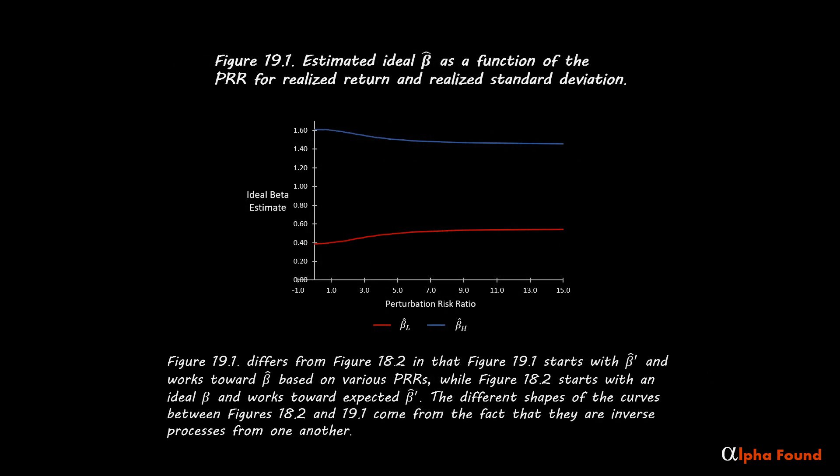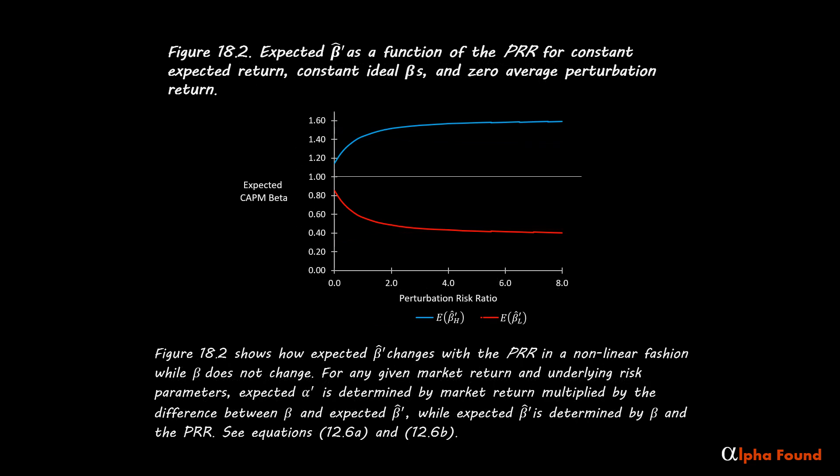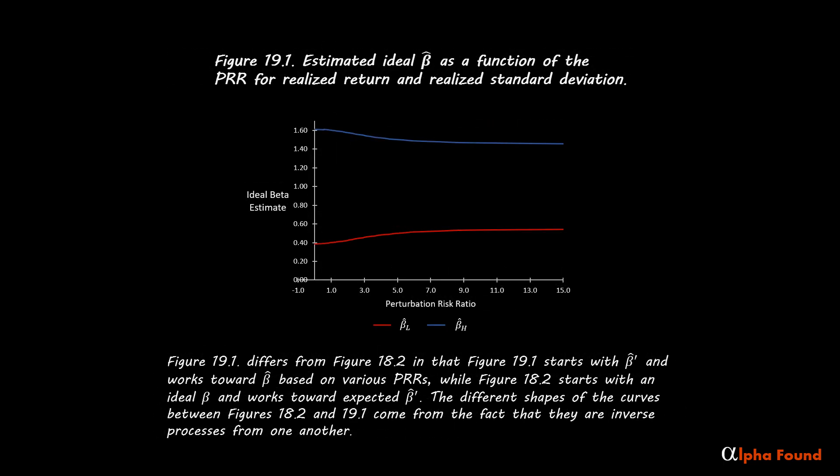Figure 19.1 shows estimated ideal beta as a function of the perturbation risk ratio for realized return and realized standard deviation. Figure 19.1 differs from Figure 18.2 in that Figure 19.1 starts with an estimated CAPM beta and works toward an estimated ideal beta based on various perturbation risk ratios, while Figure 18.2 starts with an ideal beta and works toward expected CAPM beta. The different shapes of the curves between Figures 18.2 and 19.1 come from the fact that they are inverse processes from one another. Here is Figure 18.2 for comparison, and now back to Figure 19.1.